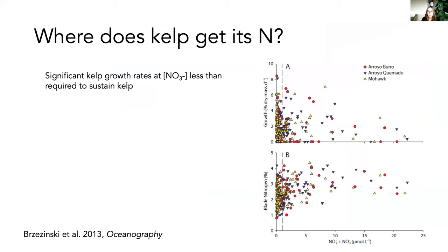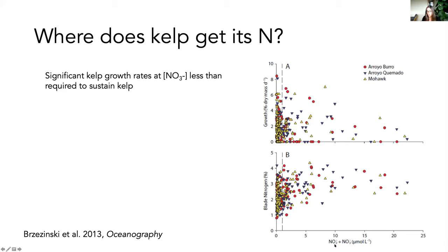The main question we're trying to answer in this theme is where does kelp get its nitrogen? This can be summarized by a figure from one of Mark's papers, which shows significant growth of kelp at really low concentrations of nitrate and nitrite. This dashed line represents a concentration at which kelp aren't thought to be able to grow, yet we obviously see kelp growing below ambient concentrations of nitrate and nitrite in the water column.